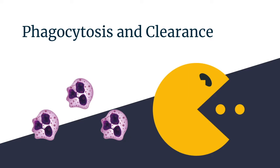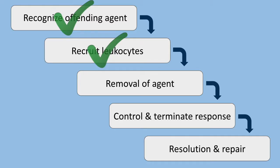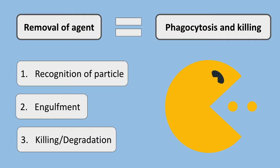In this video, we're picking up where we left off in discussing acute inflammation and are moving on to the functional responses that are most important for the destruction of microbes and other inflammatory stimuli. We move through the first two steps of recognizing the offending agent and bringing white blood cells to the appropriate location, and now we're moving on to the actual removal of the inflammatory stimulus. Removal of the agent is just code for phagocytosis and killing.